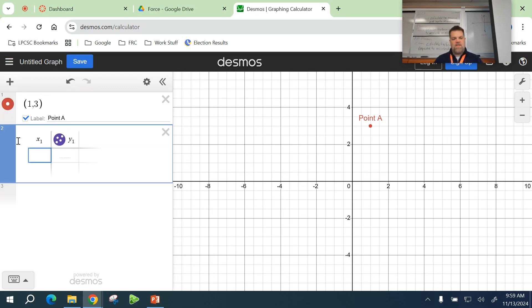So if you insert a table, I could do 1 comma 3, and 2 comma 0.5, and then 3 comma... do my math... 7.